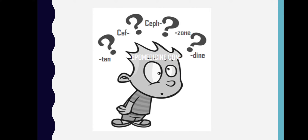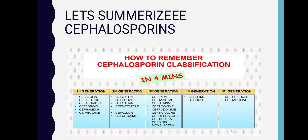Assalamu alaikum. Continuing from the last lecture on cell wall inhibitors part two, we now cover cephalosporins. Cephalosporin classification is difficult to memorize, so first we will memorize the cephalosporin classification.